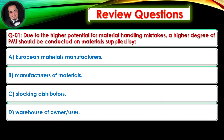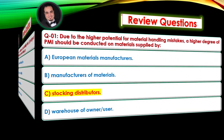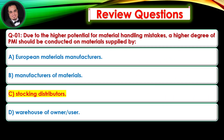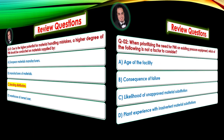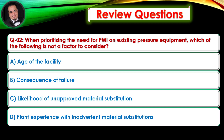Review Questions. Question 1: Due to the higher potential for material handling mistakes, a higher degree of PMI should be conducted on materials supplied by — Answer is C. Question 2: When prioritizing the need for PMI on existing pressure equipment, which of the following is not a factor to consider? — Answer is A.